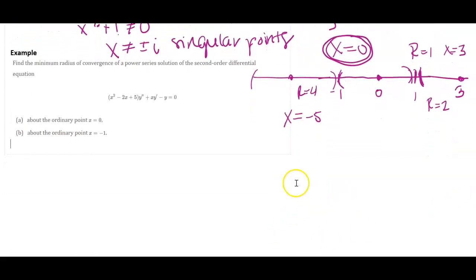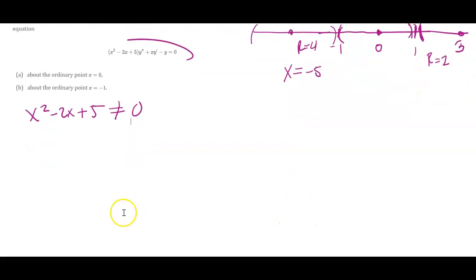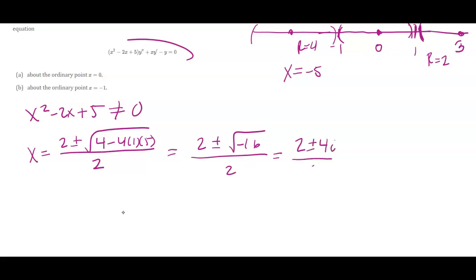Okay. So let's go ahead and find the singular points of my differential equation here. So I am going to find the zeros, or say not equal to zero. And there aren't any numbers that make this factorable, so I'm going to use the quadratic formula. And I end up getting 2 plus or minus the square root of negative 16 over 2, which ends up giving me 2 plus or minus 4i over 2, or 1 plus or minus 2i.